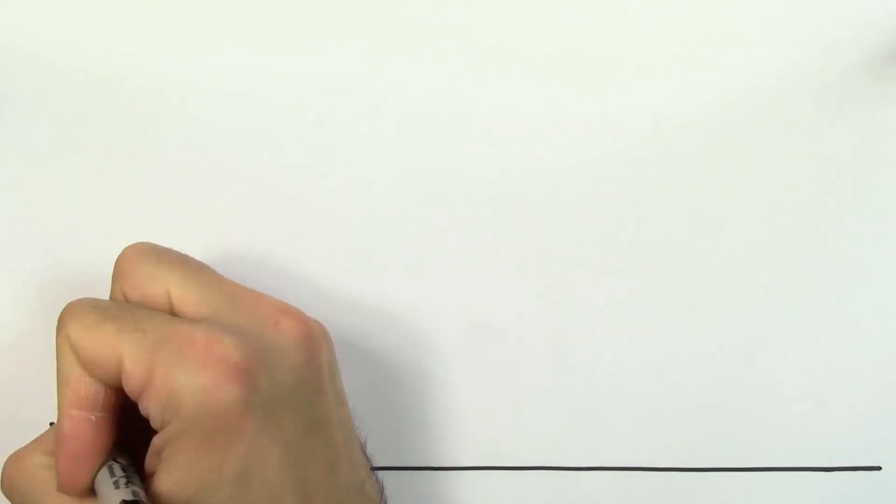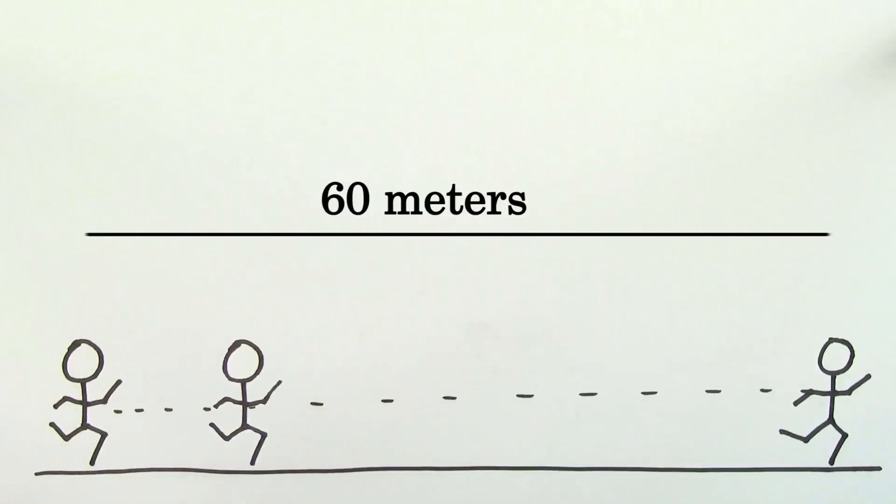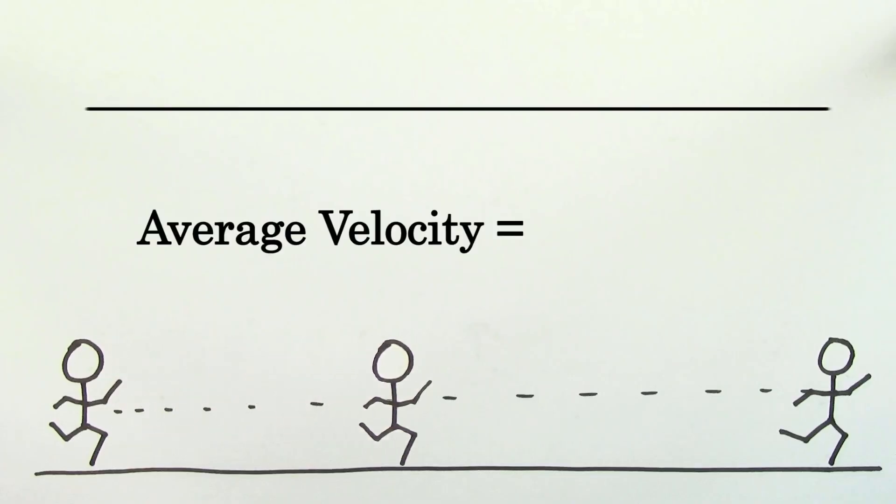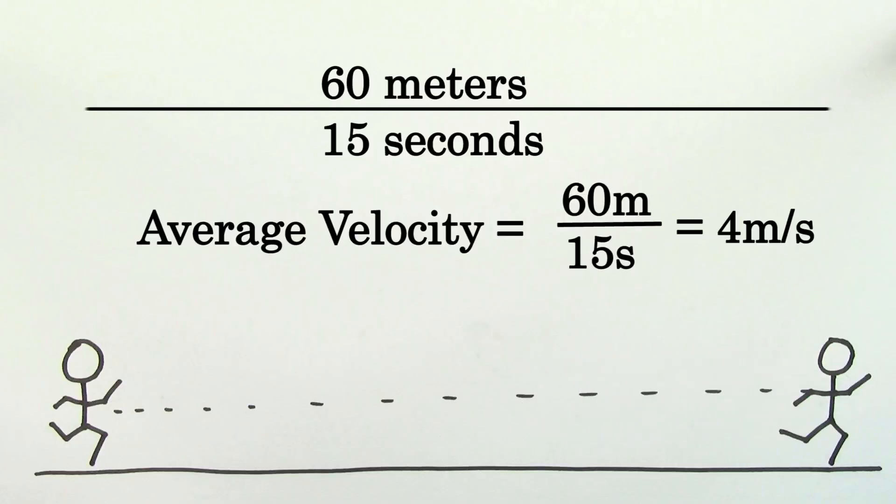In other words, let's say you jogged 60 meters in a time of 15 seconds. During this time, you were speeding up and slowing down and changing your speed at every moment. Regardless of the speeding up or slowing down that took place during this path, your average velocity is still just going to be 4 meters per second to the right, or if you like, positive 4 meters per second.